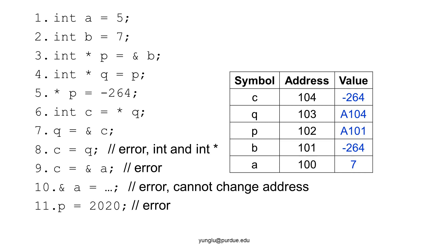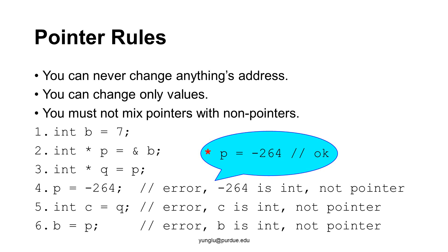The tenth line is an error because we, as programmers, cannot change the address of anything. Our programs have to accept the addresses assigned by operating systems. The last line of this slide is also an error. P is a pointer and it must store an address. The value 2020 is an integer, not an address. Thus, this is an error. This slide shows more examples of errors. All errors in this slide involve mixing types of integers and integer pointers.